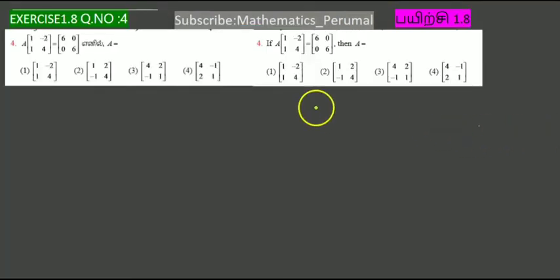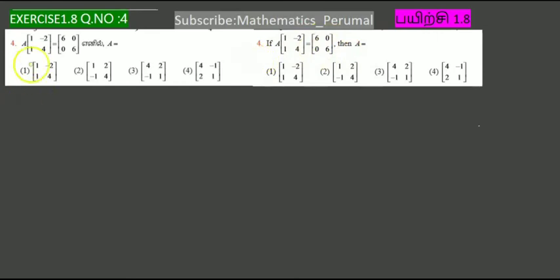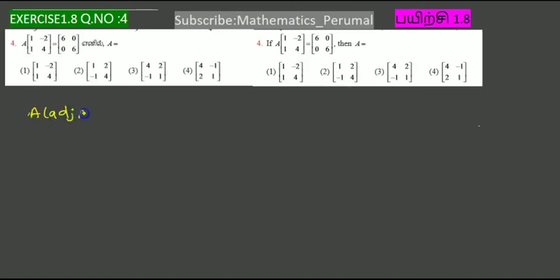Fourth question. We have a matrix A — a 2×2 matrix — where A multiplied by another matrix equals 6 0 / 0 6, which is 6I. We need to find A equal to I.